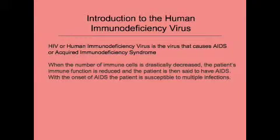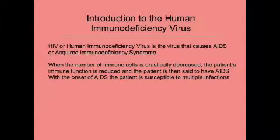HIV works by invading white blood cells known as T-cells or CD4 cells, which are part of the immune system and used to fight off infection. In the final stages of the HIV infection, the number of T-cells have been depleted to a level where the body can no longer fight off infections. During this stage, the patient is said to have AIDS.